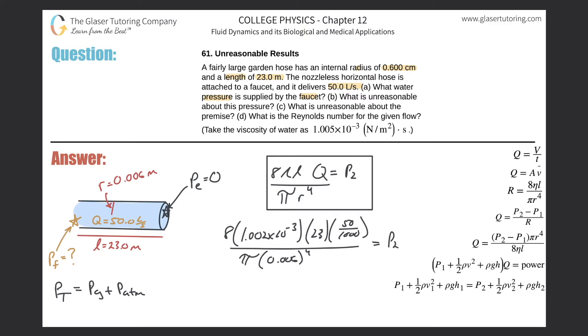Divide this now by pi multiplied by the radius 0.006 and raise that to the fourth power, and this will be equal to the pressure at that faucet. Let's throw it on into the calculator. We got 8 times 1.002 times 10 to the minus 3 multiplied by 23 times 50 divided by 1000.